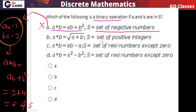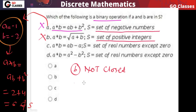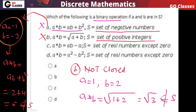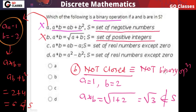Option B: the base set is the set of positive integers, and the operation is a★b = √(a + b). This is also not a binary operation. If you take a = 1, b = 2, then a★b = √3, which is not a positive integer. So option B is also not closed, meaning it is not a binary operation. Closure property means binary operation; not closed means not a binary operation.